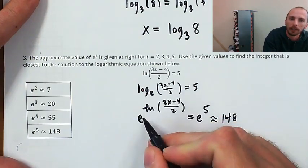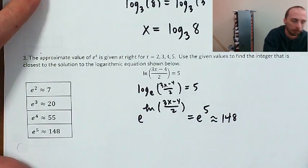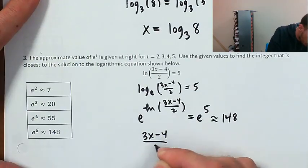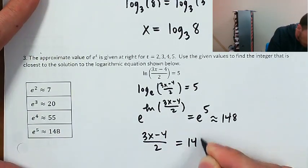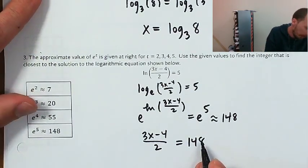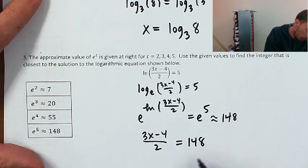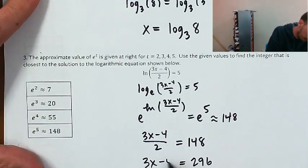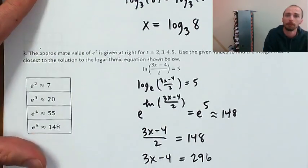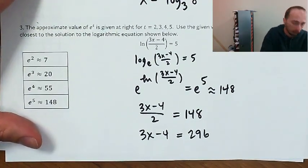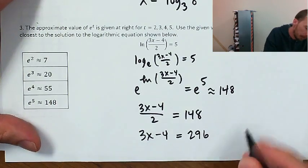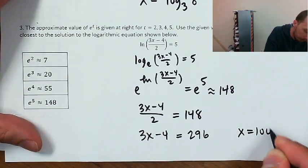The base of the log needs to be the base of the exponential. e to the natural log of (3x minus 4) over 2 equals e to the 5, which is approximately 148. e to the natural log of a thing is just going to be that thing, so 3x minus 4 divided by 2 equals 148. I'm going to multiply both sides by 2, giving 296. Add 4, you get 300, divide by 3 — that's x equals 100.